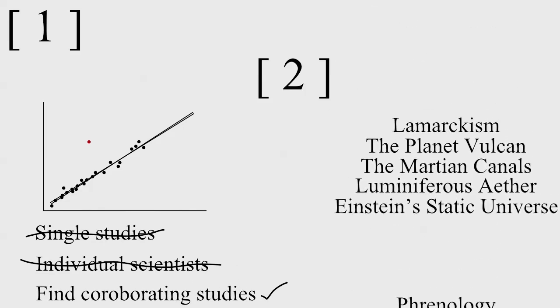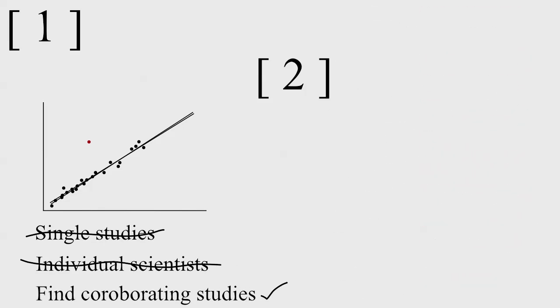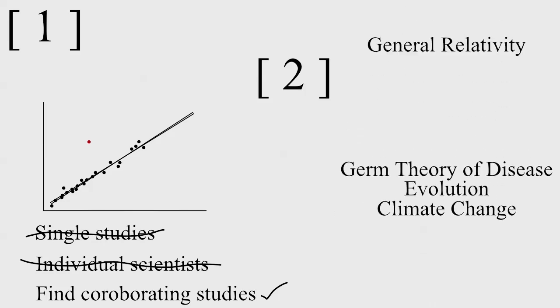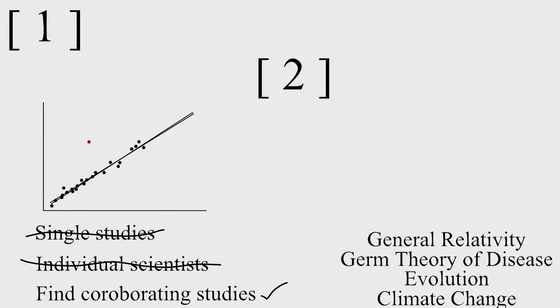Second, when theories are falsified, they are binned by mainstream science as the best explanation of the data. Climate change, evolution, germ theory, general relativity—nothing is sacred in science. These exist as theories today because they've stood the test of decades of scrutiny and have grown to incorporate new evidence and accurately describe previously unavailable data.